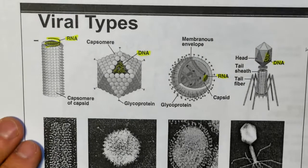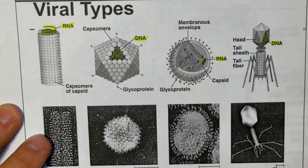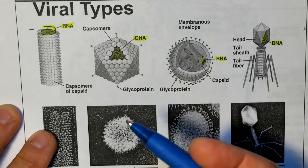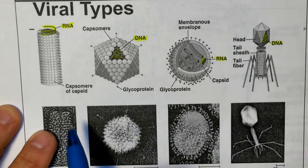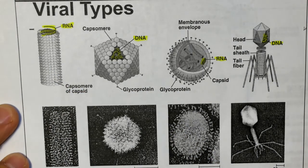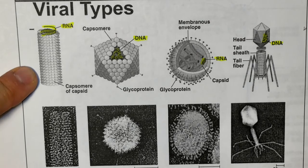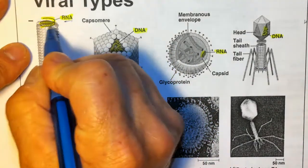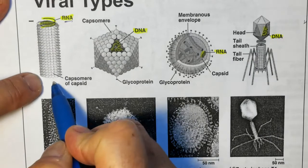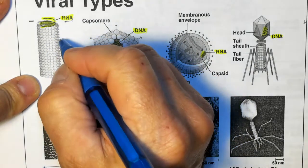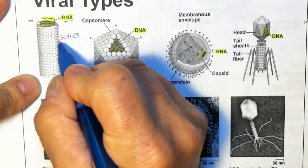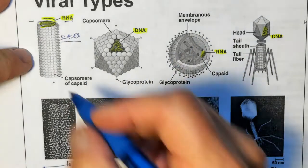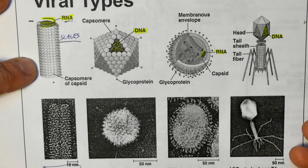Here are a few views of some common viruses, just to illustrate the two main components. This first one is one of the first viruses that was very well studied — the tobacco mosaic virus. It attacks tobacco plants. You can see here that the nucleic acid is RNA; it's that coil thing that goes all the way down inside. And then each one of these things that looks like scales is really a protein, and all of them are surrounding the RNA — basically a protective layer around the RNA.